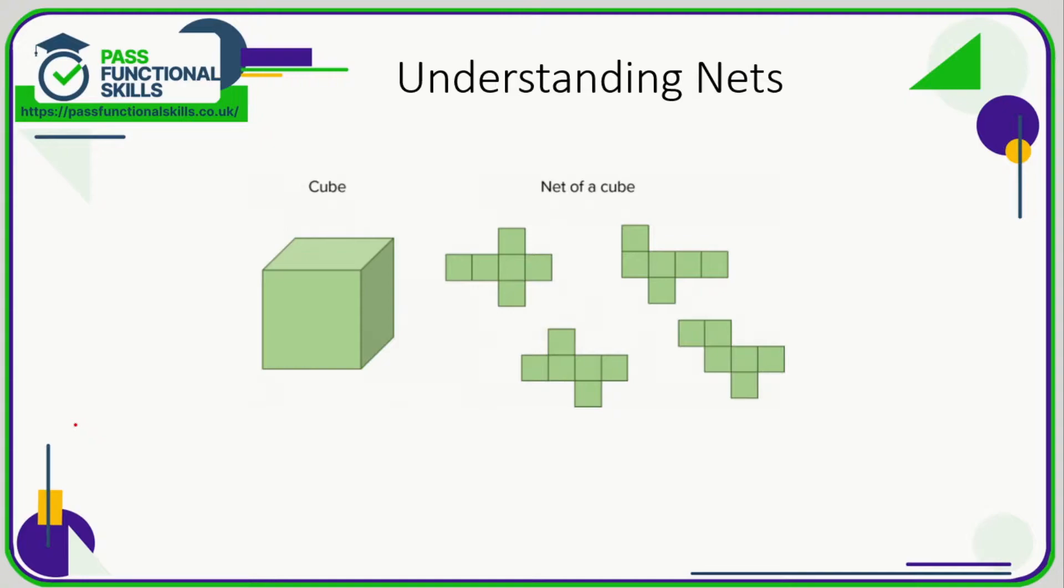Let's take a look now at nets. So on the left we've got a cube. Now the net of a cube is the shape in its flattened form. So if you imagine what it would look like if you needed to do some origami, what it would look like if you needed to build a cube from a flat piece of paper.